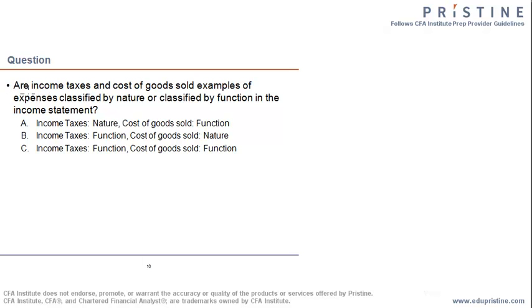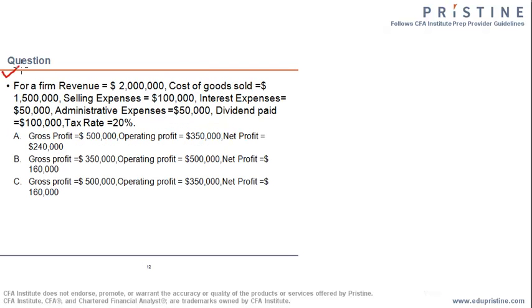Another CFA-style question: 'Are income taxes and cost of goods sold examples of expenses classified by nature or by function?' Income taxes are always classified by way of nature, and cost of goods sold is a manufacturing expense classified by way of function. So option A — income taxes by nature, COGS by function — is the correct answer.